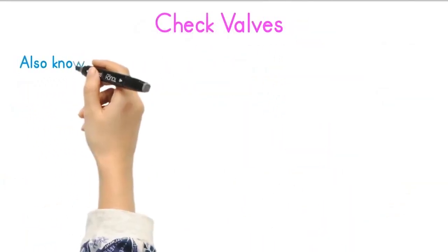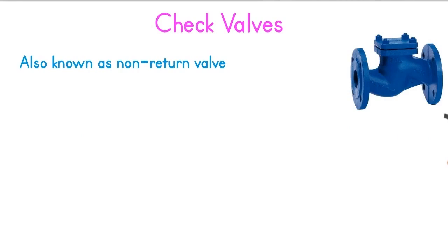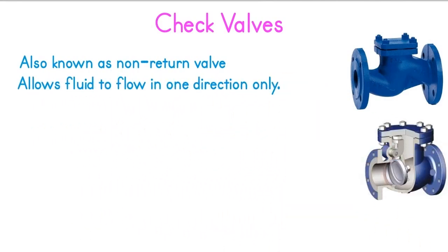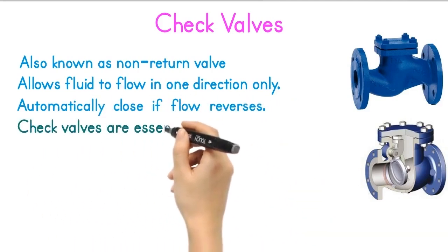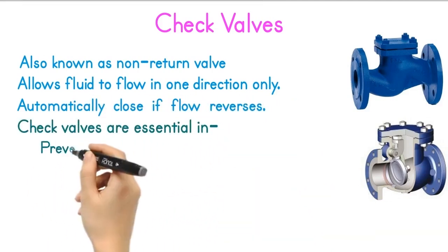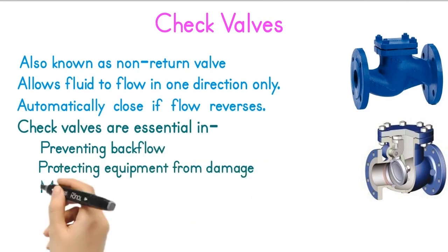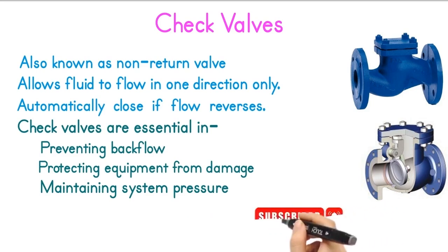Check valves, also known as non-return valves, allow flow in one direction and automatically close if flow reverses — it's like a one-way door. Check valves are essential in preventing backflow, protecting equipment from damage, and maintaining system pressure. They are used in water treatment plants, industrial processes, HVAC systems, and many more applications.